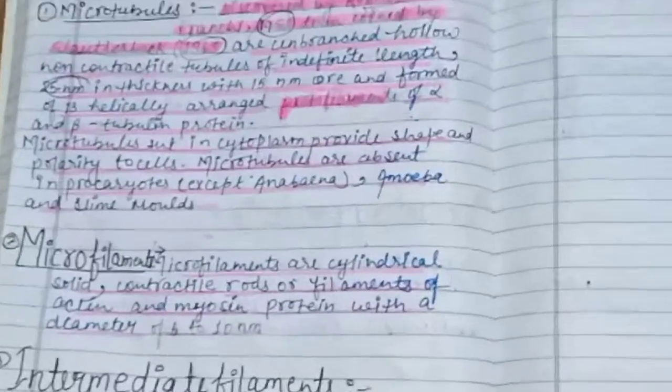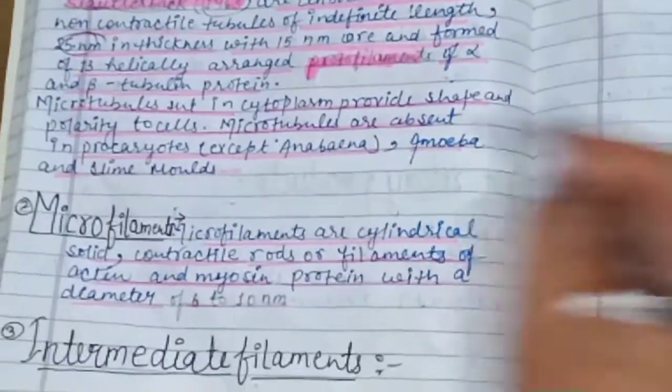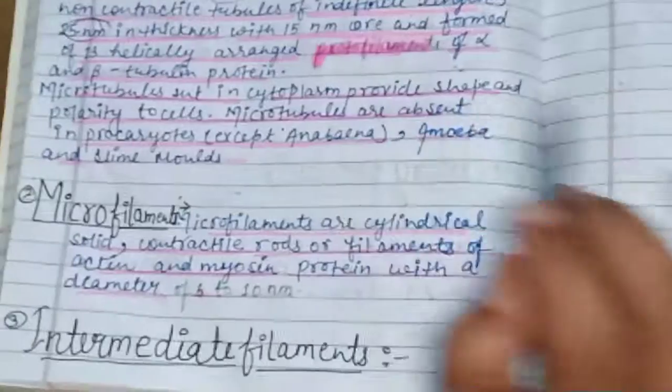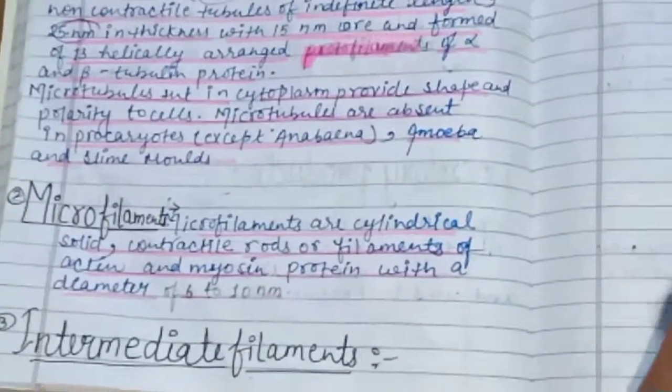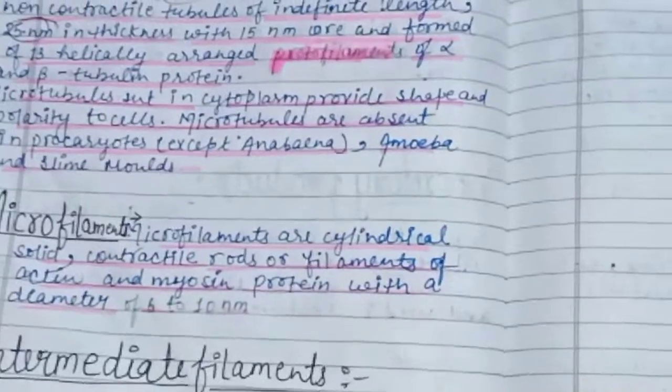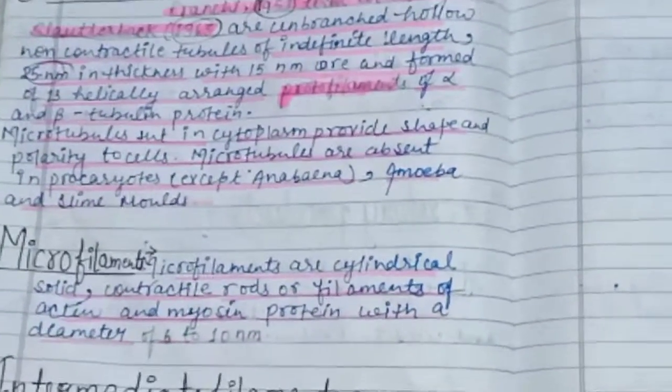The second type is microfilaments. Microfilaments are cylindrical, solid, contractile rods and filaments of actin and myosin protein with a diameter of 6 to 10 nanometers.